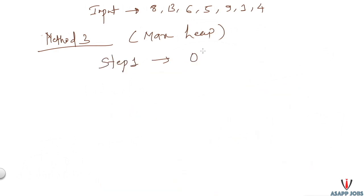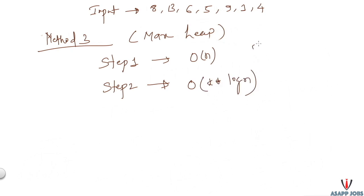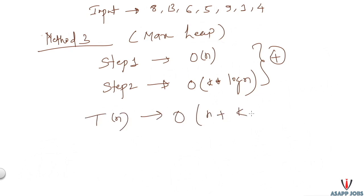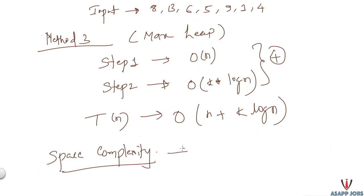In step 2, after each extraction we heapify, which takes O(log n), and we do this k times, so step 2 takes O(k log n). The total time complexity is therefore O(n + k log n). Space complexity is O(1) constant, since we are not using any extra memory beyond the array itself.